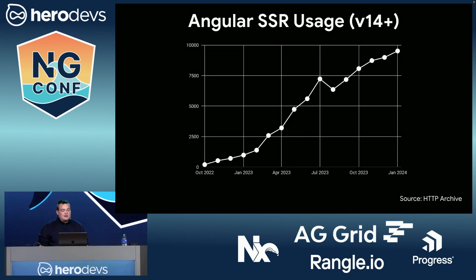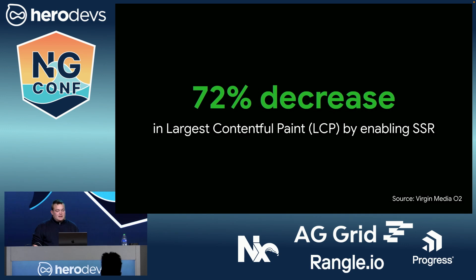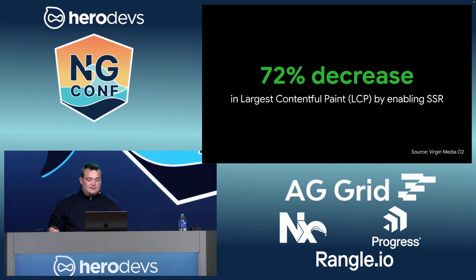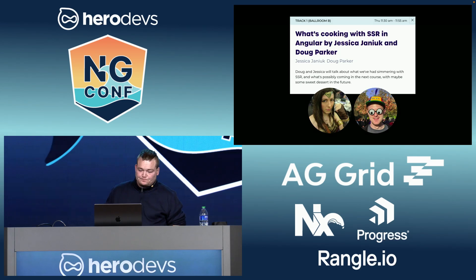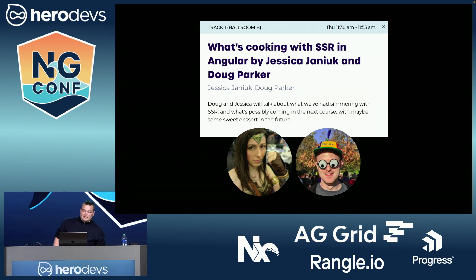Especially at such an exciting time, with features like hydration being landed and adoption growing pretty rapidly. And that adoption shouldn't be very surprising. Server-side rendering and hydration have a noticeable impact on your core web vitals. As Jeremy mentioned this morning during the keynote, Virgin Media O2 saw a decrease of 72%, which is about 1.3 seconds, to their largest contentful paint times by enabling server-side rendering. And across the board, we've seen impressive improvements for websites that enable it. And there's even more coming — be sure to come back here tomorrow where my friends Jessica and Doug will tell you more about what's cooking.